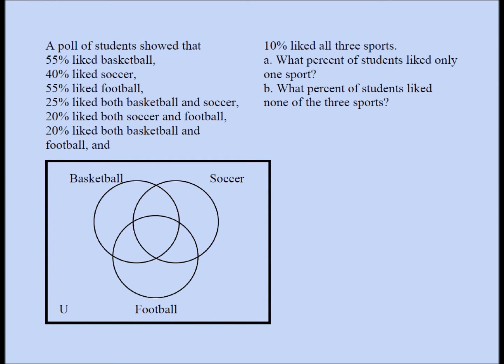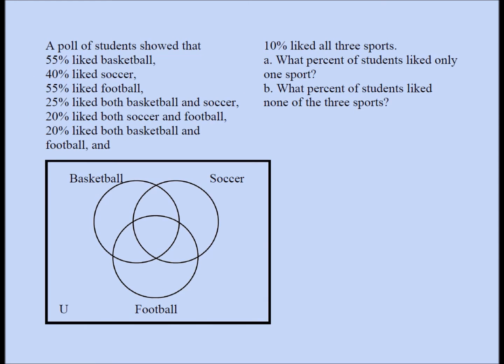What I have here is the same question on top with all the important facts available. These are the important facts, and these are the questions we're going to be answering. Let's try to understand what the Venn diagram really means. When you have three different sets — a set representing people who like basketball, a set for soccer, and a set for football — these three sets can overlap in the way the picture is depicting.